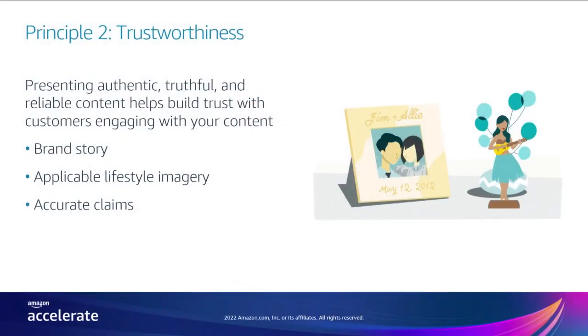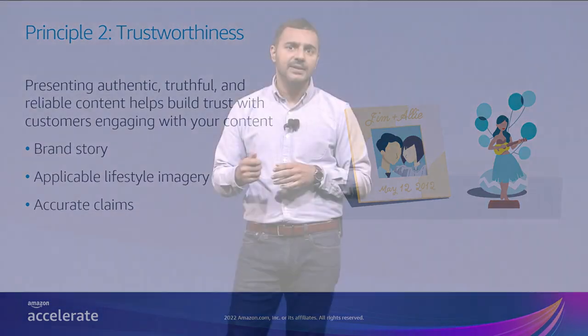Trustworthiness is the second principle of high-quality A-plus content. Trustworthy A-plus content is valuable, authentic, reliable, and consistent. As we heard earlier, the brand story feature is a powerful tool to build trust with customers. Ensure that you use applicable lifestyle imagery and have accurate claims to signal that your brand is trustworthy. Create unique and authentic content which is validated by social proof. Always emphasize value over promotion, and be consistent and avoid common mistakes.